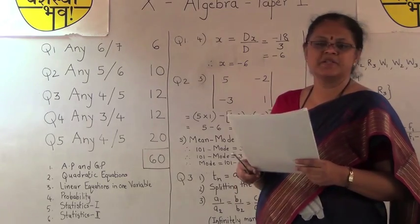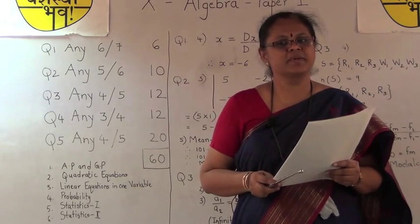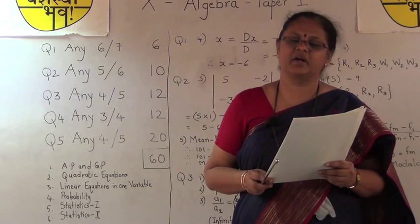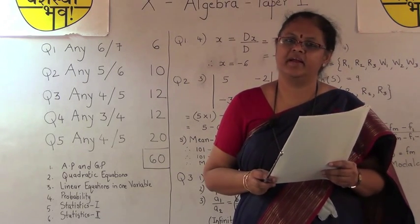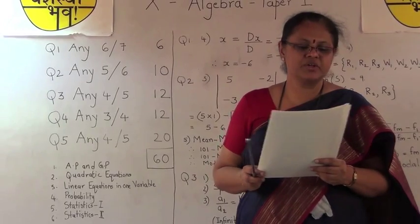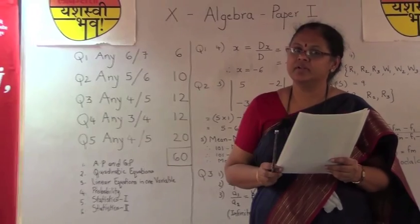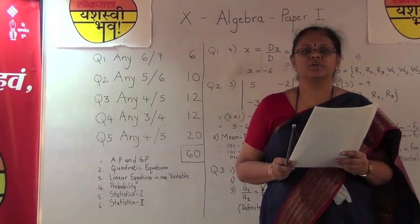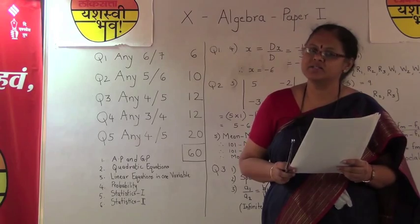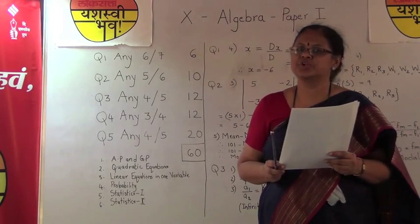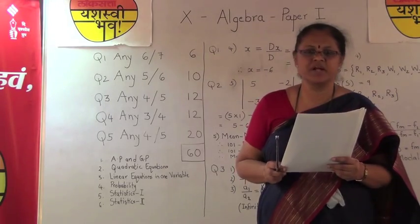Question number 5: write the sample space. You would just say let S be the sample space, and since a coin is tossed, the sample space would contain H and T — head and tail. Similarly, question numbers 6 and 7 are based on statistics. Children, once again revise the topic from the standard nine syllabus for answering sums related to question number 1, which would contain the basics of statistics.